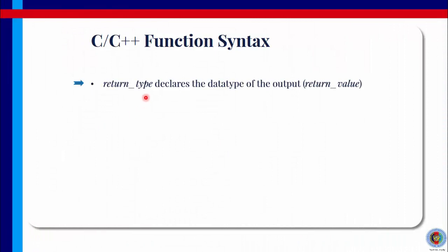So let us explain again the parts of the function definition just now. The return type declares the data type of the output. The output in this case is the return value, the value that is returned by the function. If the function is not returning anything, the return type has to be void. If the return type is integer, then it is int. If the return type is double, then it is double. But if there is no return type, it is void.